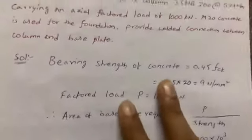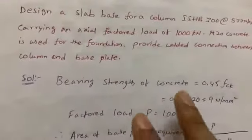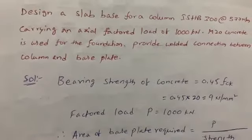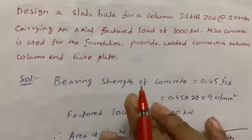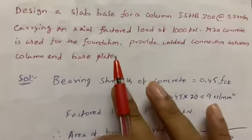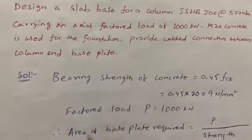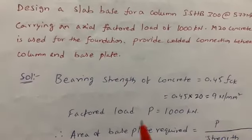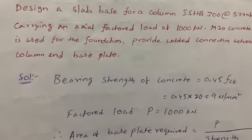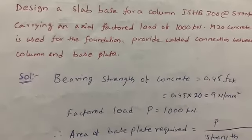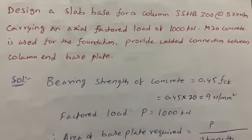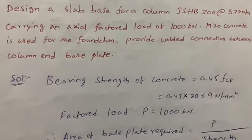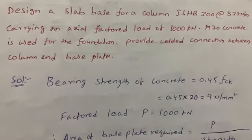So that is how we design a slab base in the design of steel structures. In column foundations there are two types of column bases: slab base and gusset base. This was the slab base problem, and in the next video I am going to upload a gusset base problem. Thank you so much, thanks for watching.